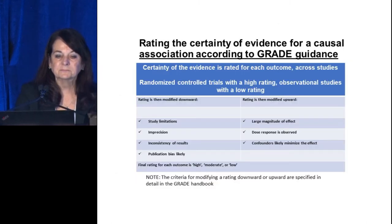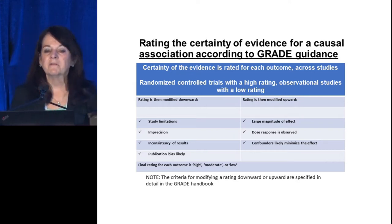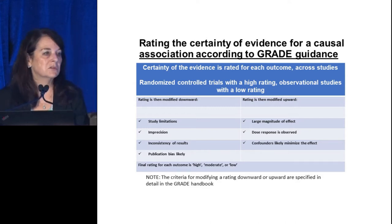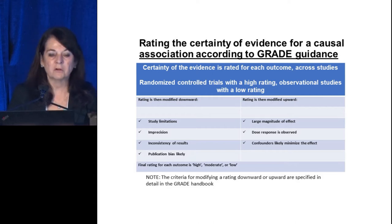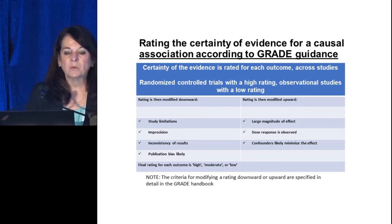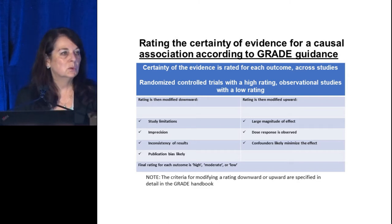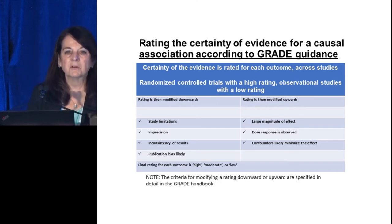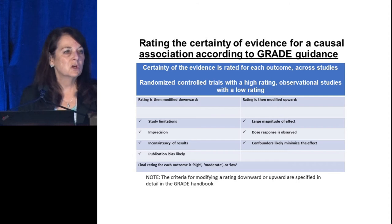As an example of grading certainty of evidence for causal association according to GRADE guidance, randomized controlled trials have a different GRADE result than observational studies. A randomized controlled trial typically starts out with a high level of evidence, but the rating can be modified downward if evaluators conclude there are study limitations, imprecision in exposure or outcomes, inconsistency in results, or publication bias. Conversely, observational or cohort studies typically start out with a low rating, but can move up if there's a large magnitude of effect, a dose-response is observed, and carefully measured confounders minimize bias.